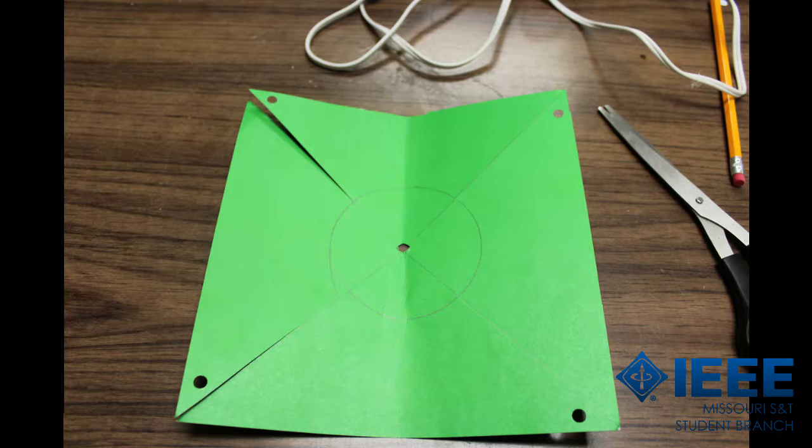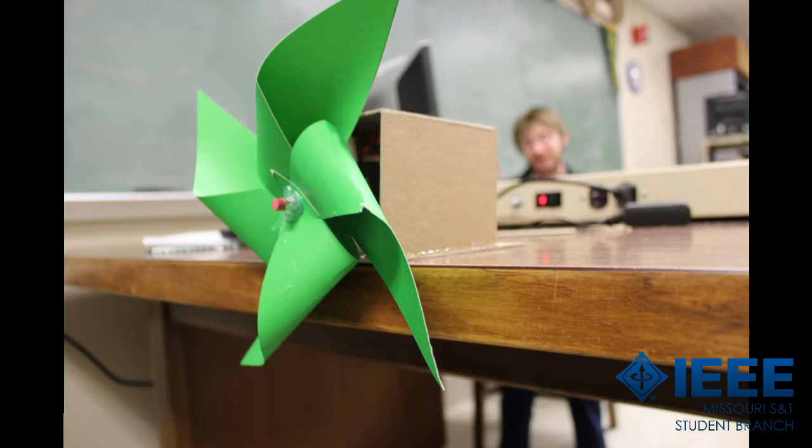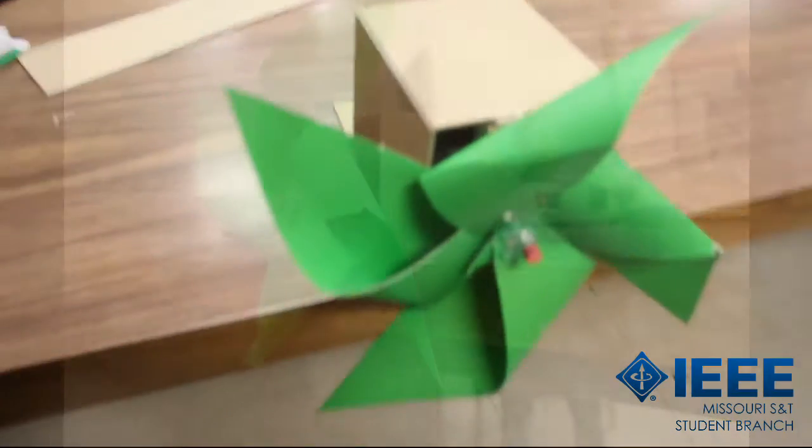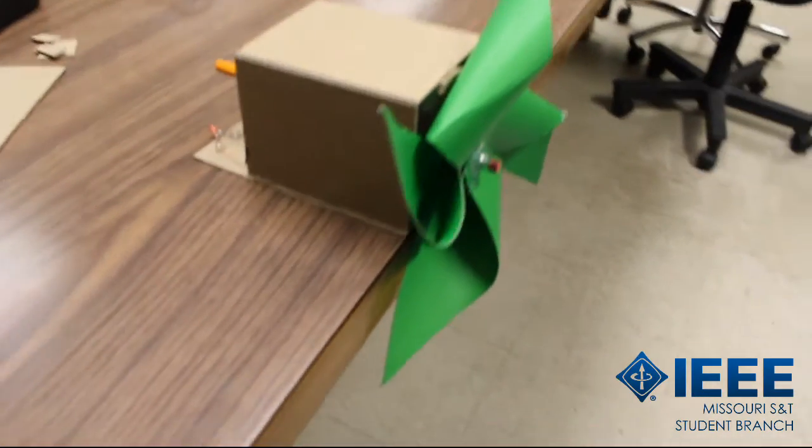Make a hole in the center of your piece of paper that a pencil will be able to fit through. And punch a hole in the right corner of every triangle section of your piece of paper. Make sure the pencil can also fit through these holes. Place the piece of paper on the pencil and then fold in the corners with the punched holes to make the pinwheel. Secure the pinwheel with glue.